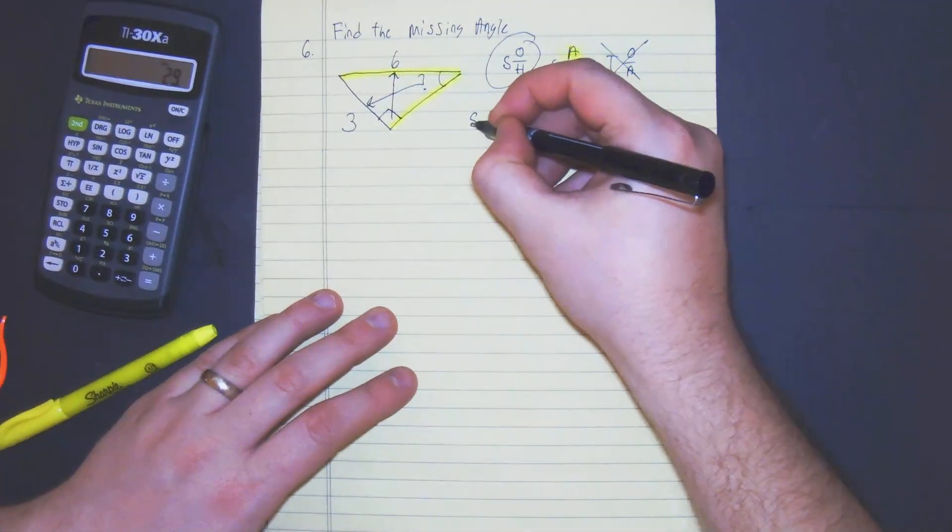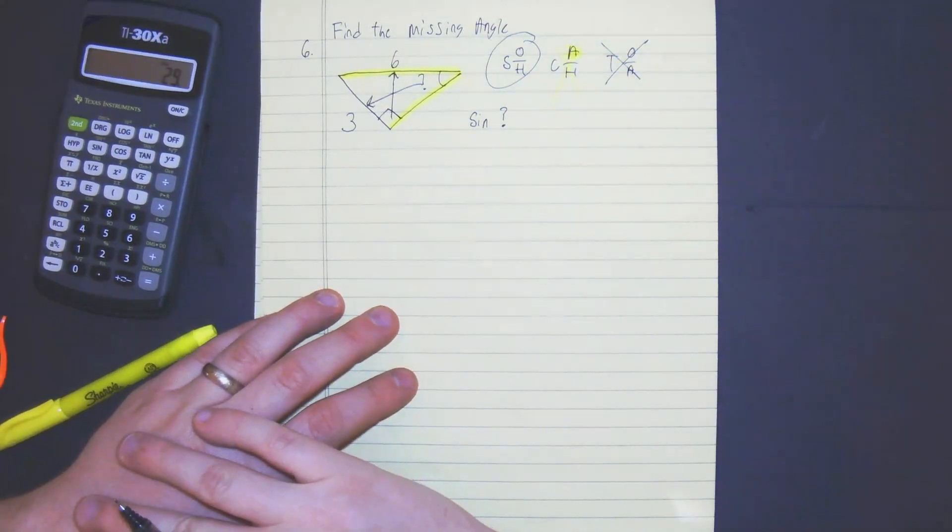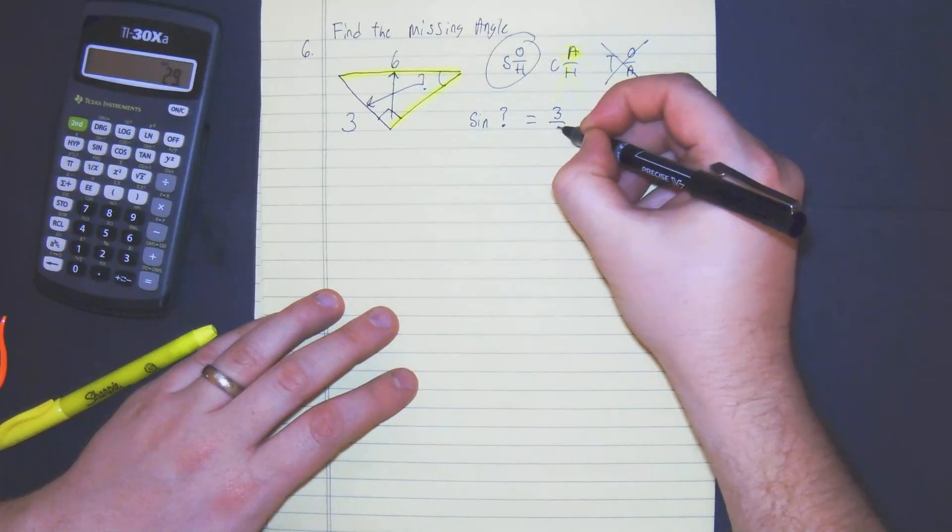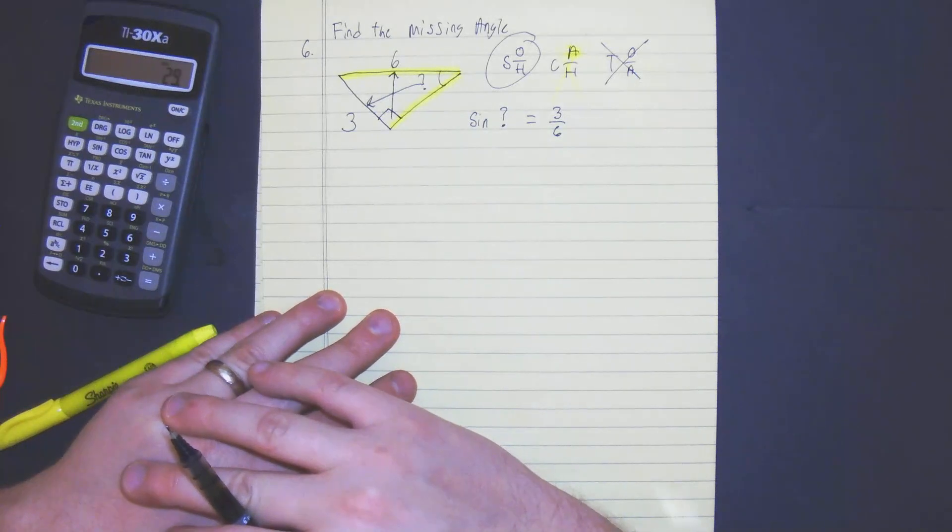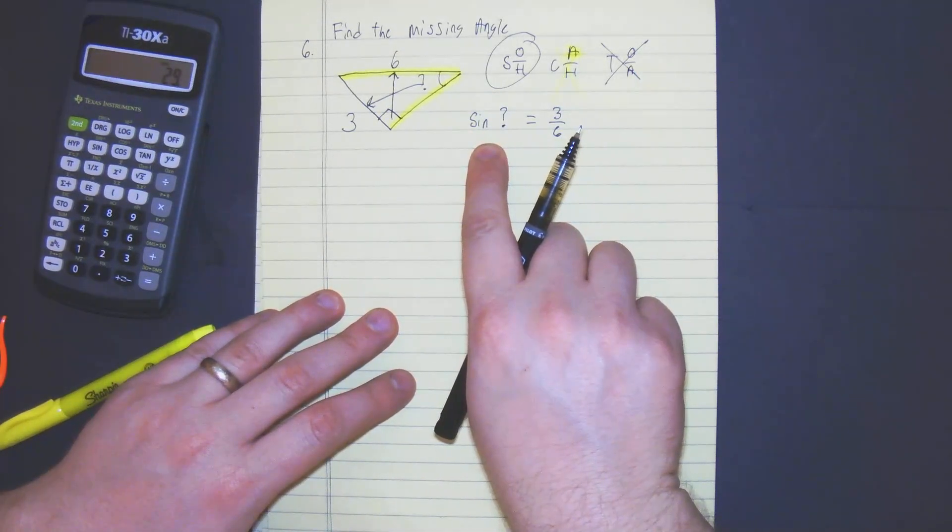So we have the sine of question mark is equal to three over six which is also half. So the first thing I need to do is we need to use our inverse trig function which is sine to the negative one.